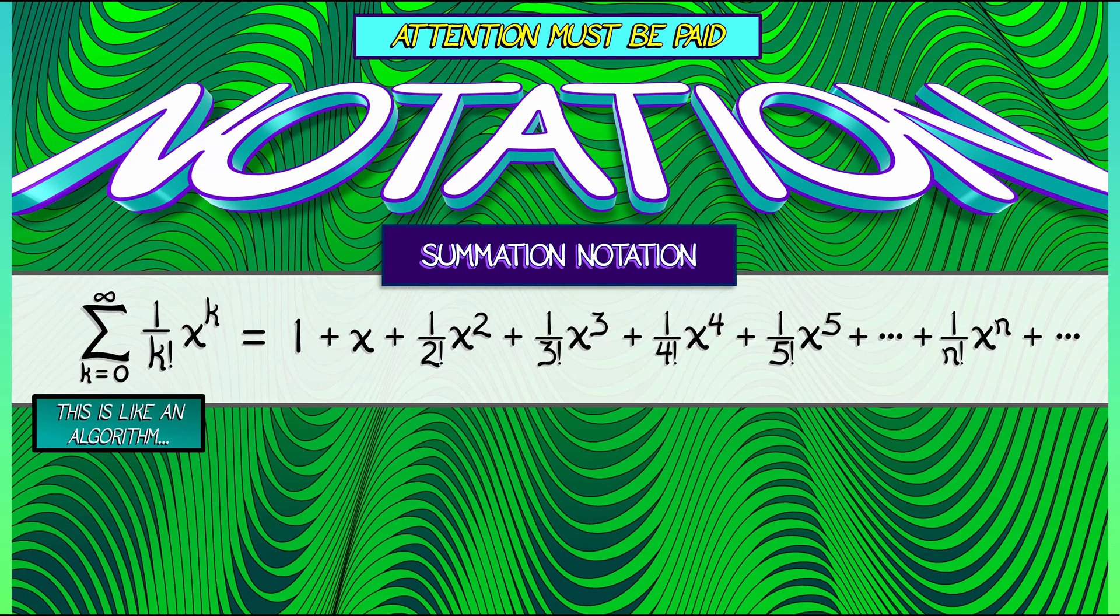It's kind of like an algorithm. So what we do is we take that index k, and you can use any letter you feel like. But we start at, in this case, k equals 0, and add all of the terms as specified under the summation sign. So when k equals 0, I have 1 over 0 factorial times x to the 0. That is, of course, 1. Then we add to it what happens when k equals 1. We get 1 over 1 factorial times x to the 1. That is simply x.